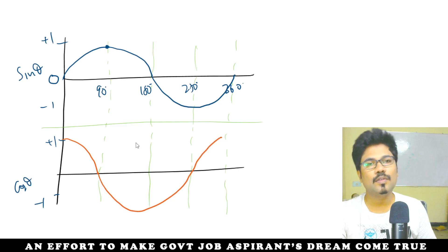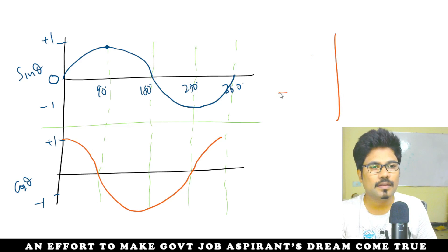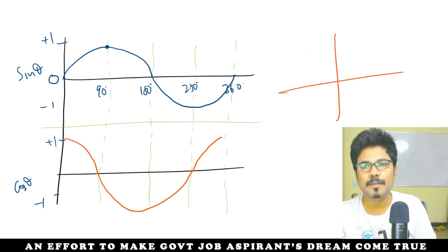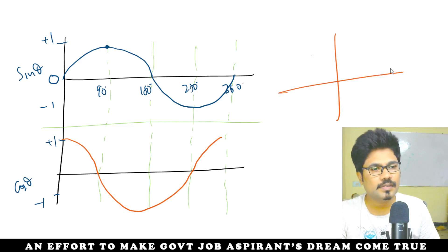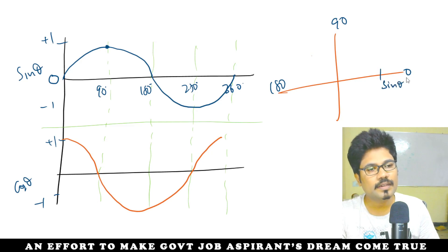This is the cos function. Simple point: sin starts at 0 degrees, then 90, then 180. Here is sin theta; here is cos theta. Sin 0 and cos 90 degrees are related. Sin 90 degrees and cos 0 are related.